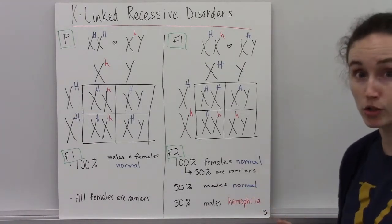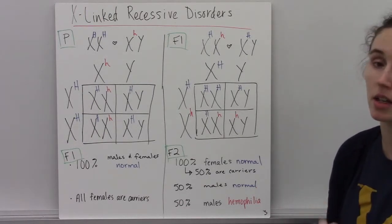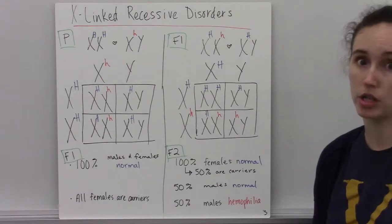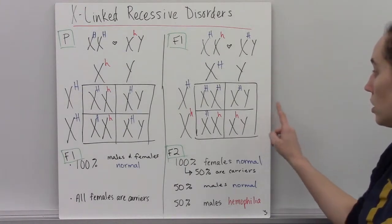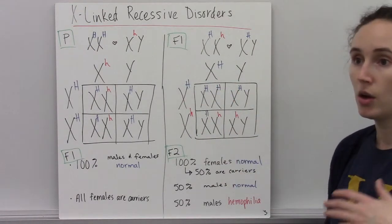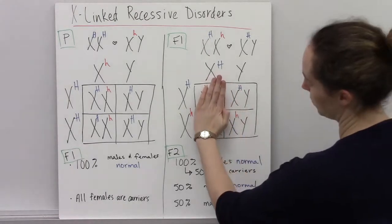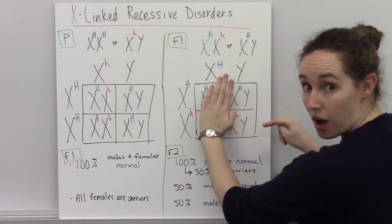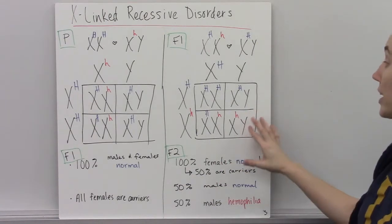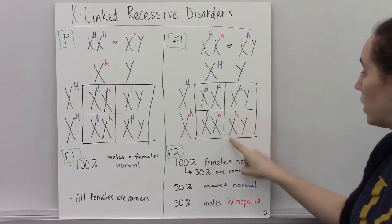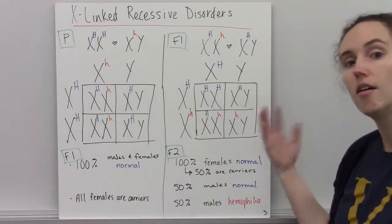When answering questions about X-linked genes and their offspring, pay very close attention to whether the question is asking what percent of children will have a certain genotype or phenotype versus what percent of males or what percent of females. For example, with this Punnett square: if asked what percent of males would have hemophilia, we look only at the males, and 50% of the males would have hemophilia. But if asked what percent of children or offspring would have hemophilia, we look at the whole set — only one in four, or 25% of the offspring as a whole, would have hemophilia. So be careful when looking at questions that involve X-linked genes.